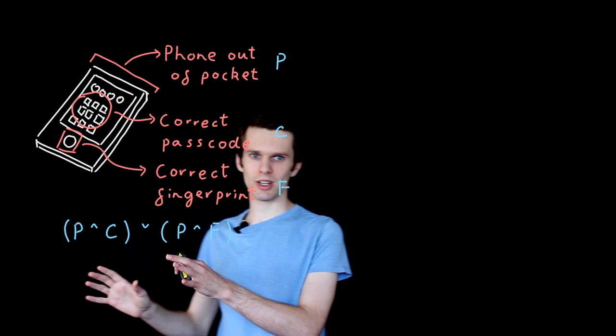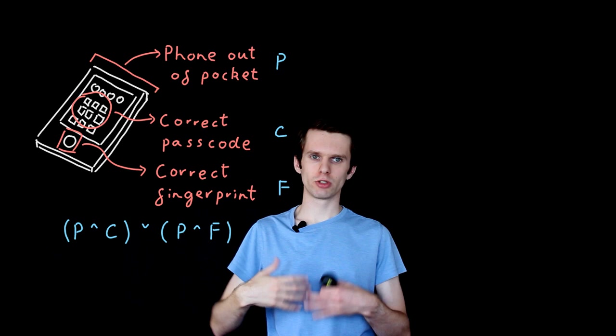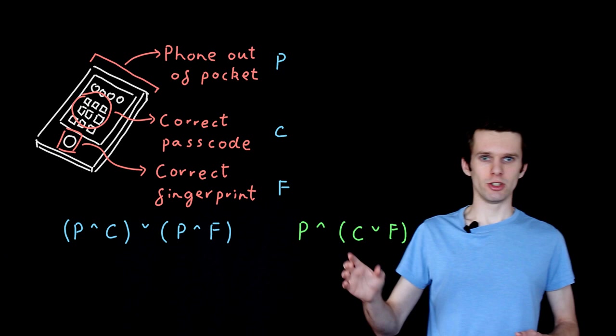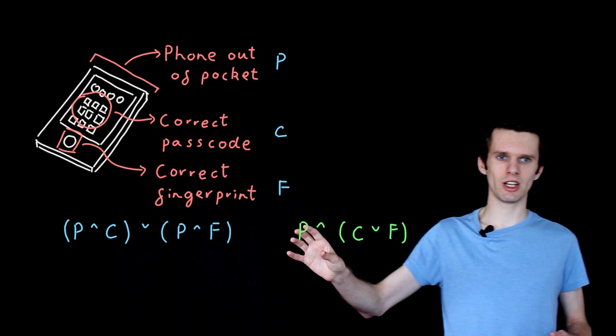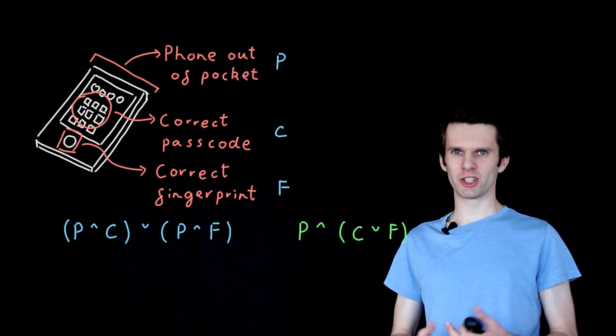And immediately, you may well be able to see where this is going because this can be simplified. Maybe we're going to be manufacturing tens of thousands, hundreds of thousands of these circuits, and we want to reduce the number of logic gates that we use. Here we're using three: two ANDs and an OR. We can reduce this to using two logic gates, an AND and an OR. So here we have the phone is out of the pocket, and also either they enter their passcode correctly or they use their fingerprint correctly.